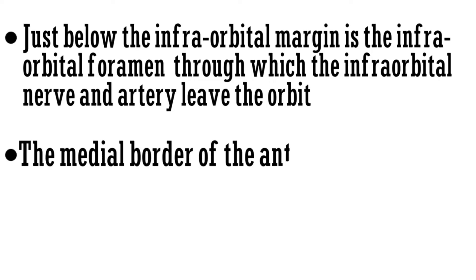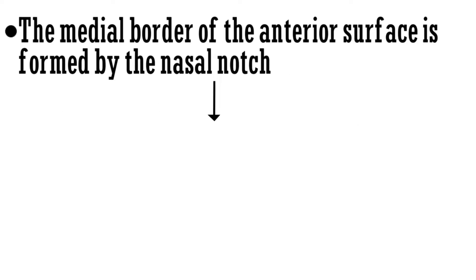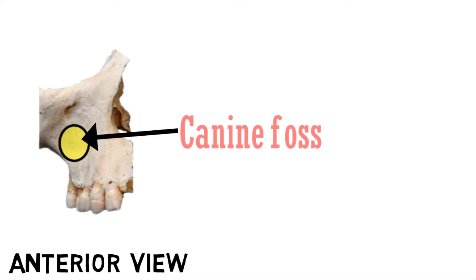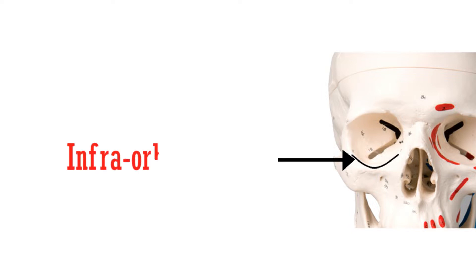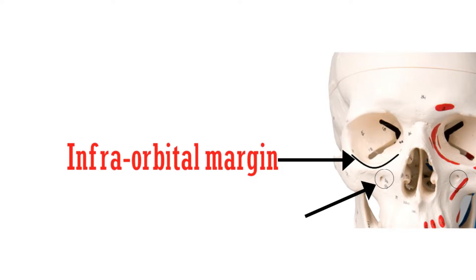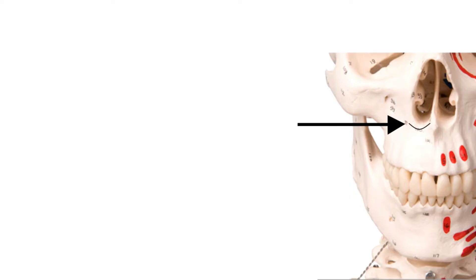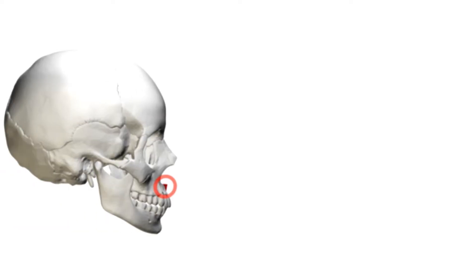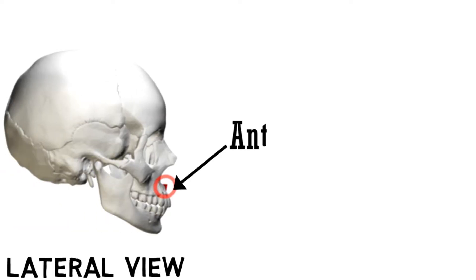The medial border of the anterior surface is formed by the nasal notch, and this notch forms the anterior nasal spine. Looking at the anterior view of the bone, the area shaded in yellow is the canine fossa. The infraorbital margin separates the anterior and orbital surfaces, with the infraorbital foramen just below. The medial border forms the nasal notch, seen as a curved line, which leads to the anterior nasal spine — a small prominence visible in the lateral aspect.